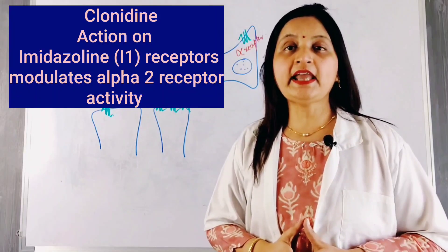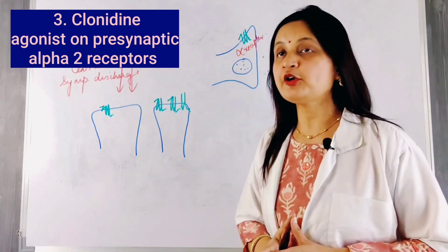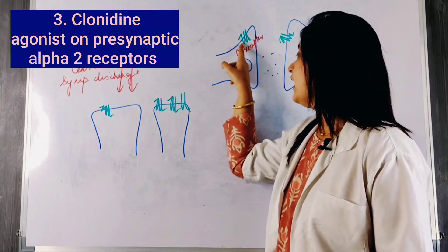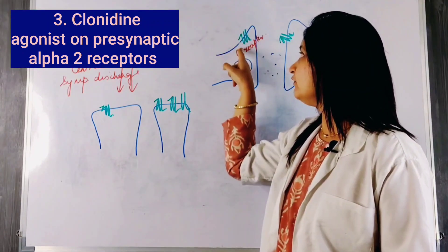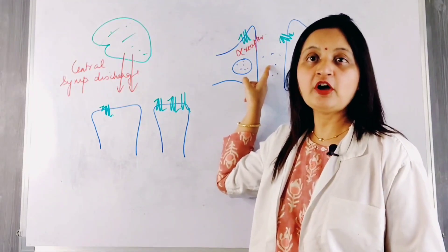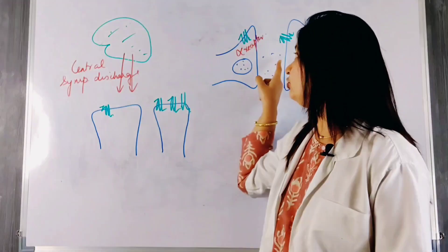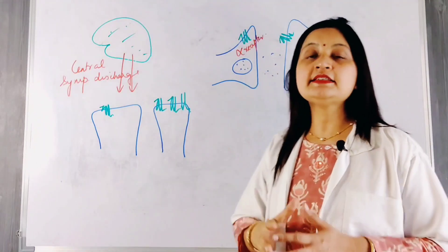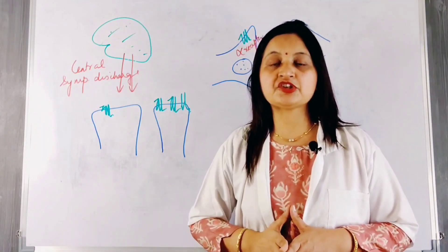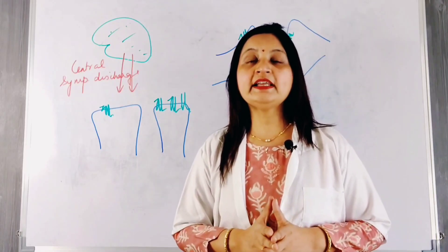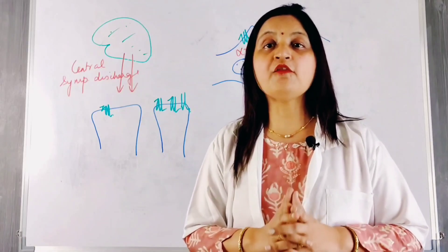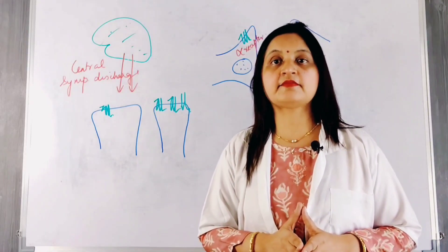Thirdly, clonidine acts as an agonist on alpha-2 receptors expressed in the pre-synaptic nerve endings. By stimulating these alpha-2 receptors, it inhibits the release of epinephrine and norepinephrine into the synaptic cleft, decreasing and helping to maintain blood pressure. In this way, clonidine acts as an antihypertensive agent by acting as an alpha-2 receptor agonist.